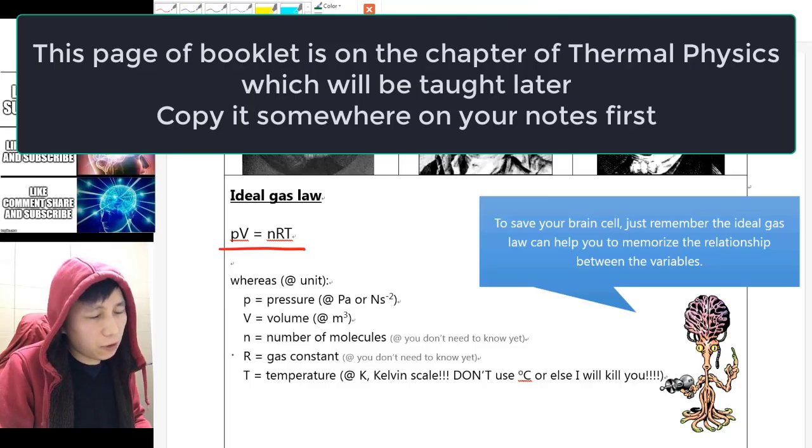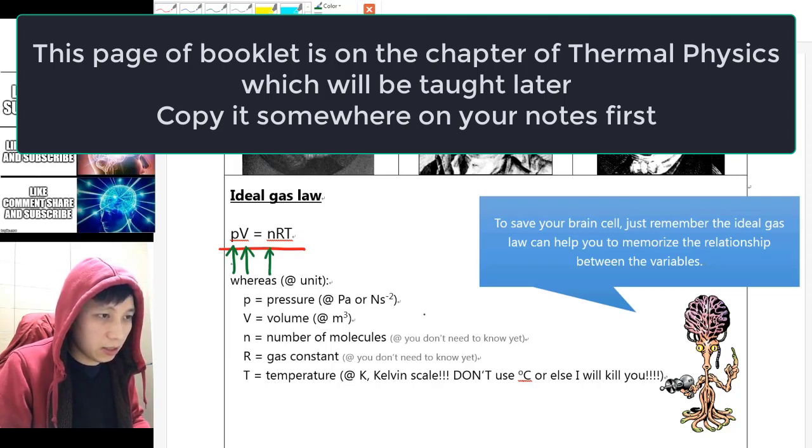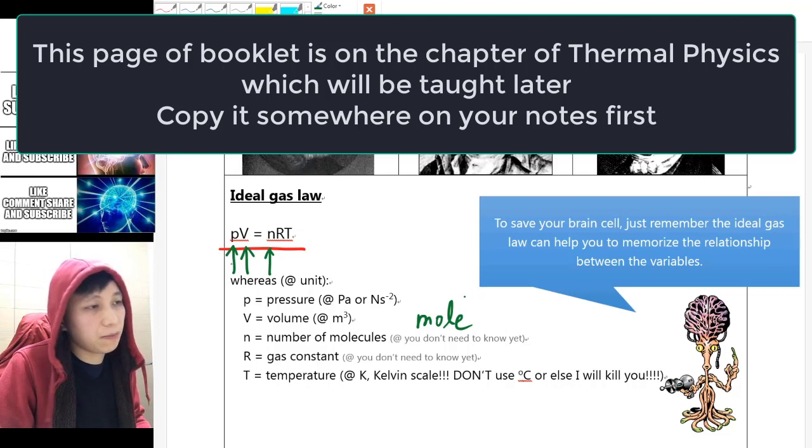First of all, you have to understand the notation. So you should know P is pressure, V is volume. As for nRT, n is the number of molecules in a unit called mole that you will learn in chemistry, not physics. But the basic idea of n is simply if you have more molecules, it will increase. If you have less molecules, it will decrease.